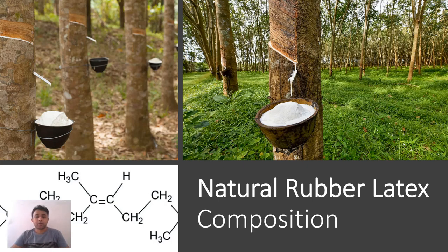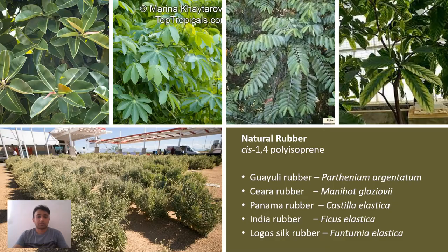Today we will discuss the composition of natural rubber latex. The latex normally contains rubber, which is cis-polyisoprene, and non-rubber substances. We are going to discuss the properties of rubber available in natural rubber latex and the effects of non-rubbers on it. Other than natural rubber, which is cis-1,4-polyisoprene, there are several other rubbers from different trees: Gavili rubber, Sierra rubber, Panama rubber, India rubber, and Lava Silk rubber.